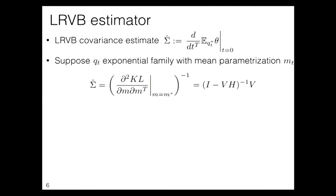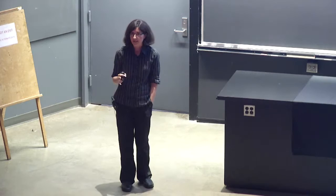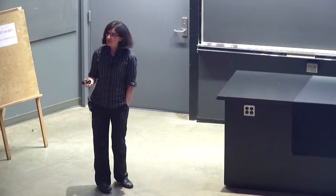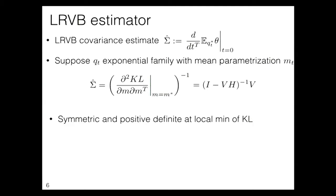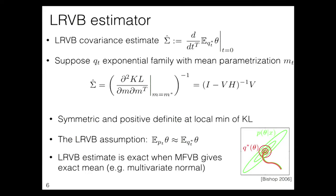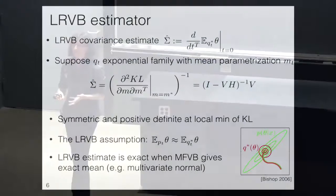Before looking at experiments, let's check the assumptions. First, this estimator — taking the form of a second derivative — is symmetric and positive definite at a local minimum of the KL, which standard mean field VB optimization achieves. Second, our one real assumption is that the means of the mean field VB optimization are well tracked. If that assumption holds, this is actually exact — not an approximation. In the multivariate normal example, where the posterior is completely described by its first two moments, the linear response estimate is exact.